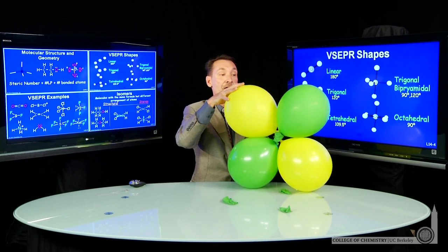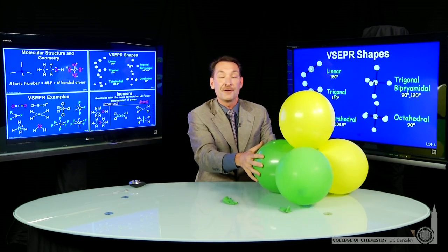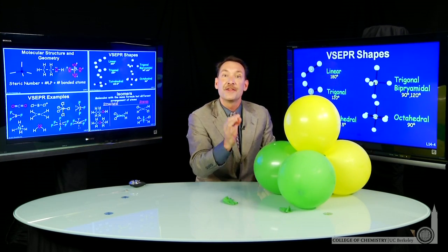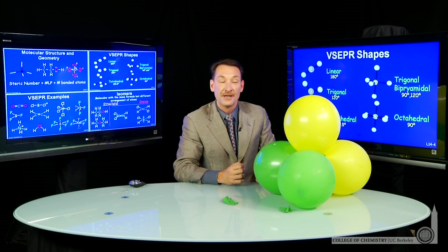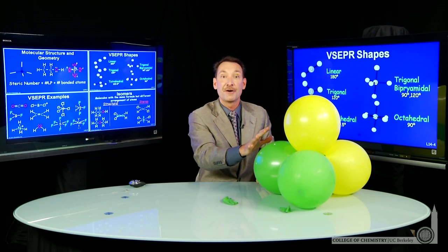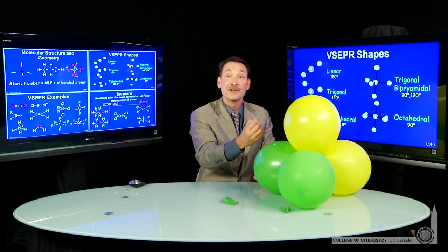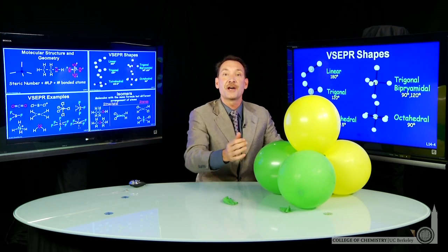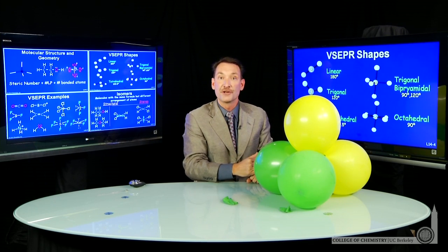These are 90 degree angles, where the better arrangement, tetrahedral, they're 109 degrees from each other. So you can see this VSEPR arrangement is better energetically. The electron pairs have bigger angles, more space between them.